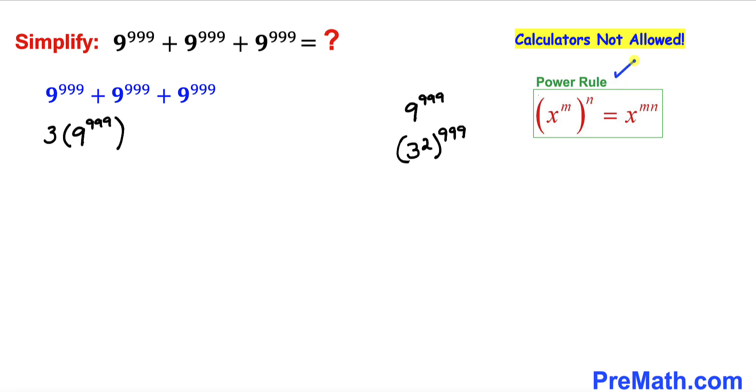Now let's recall this power rule of exponents. Whenever we have these two nested exponents we can multiply them out. Therefore this could be written as 3 times 3^(2×999).